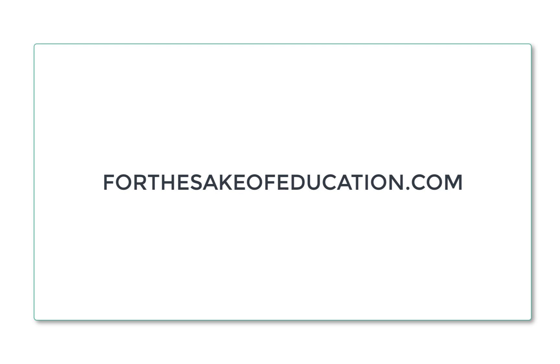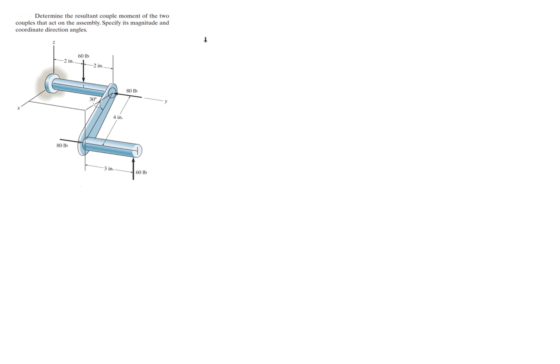For more videos visit ForTheSakeOfEducation.com. Alright guys, now we're going to do this problem that says determine the resultant couple moment of the two couples that act on the assembly. Specify its magnitude and coordinate direction angles.